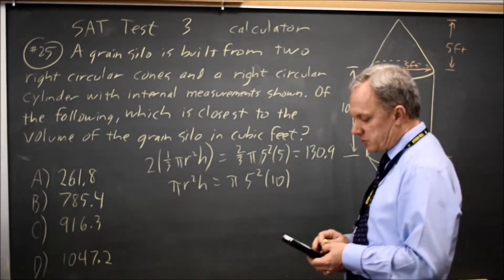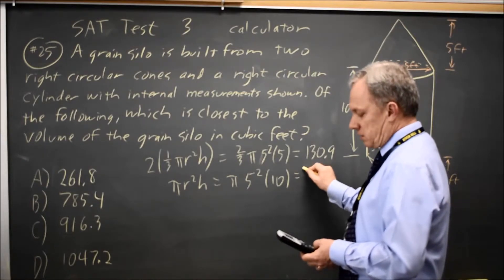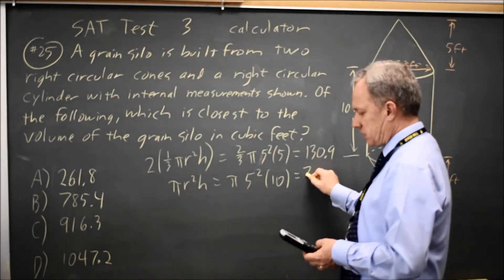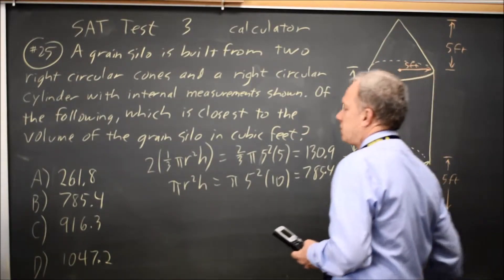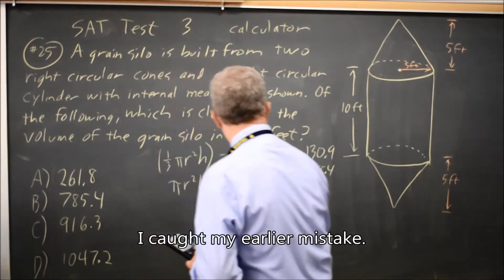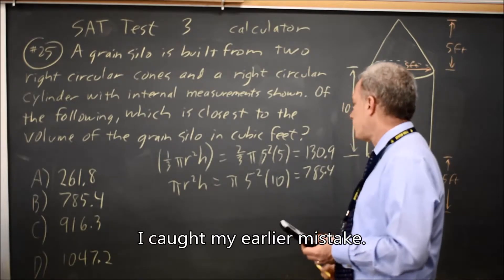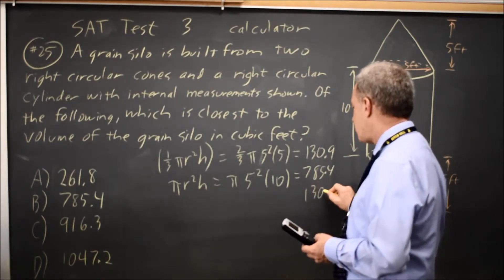So π 5² times 10 is 785.4. I wrote that twice the cone was 130, but one times the cone is 130, so I have another 130.9.